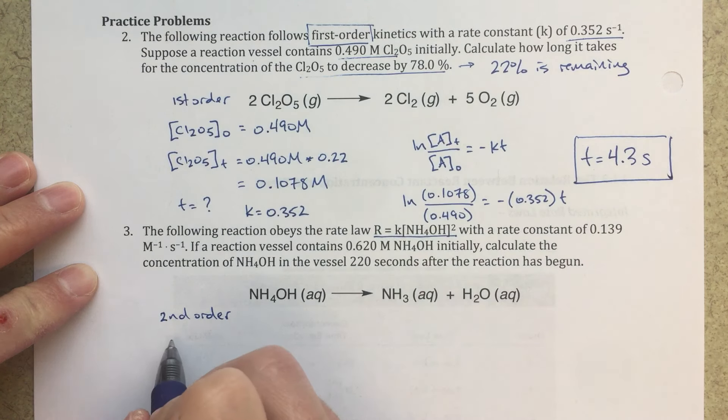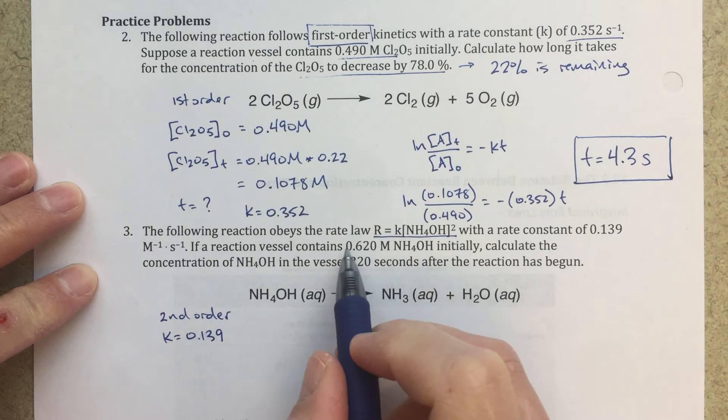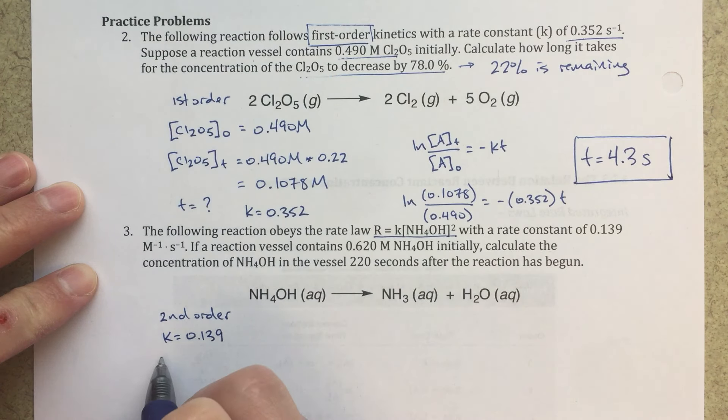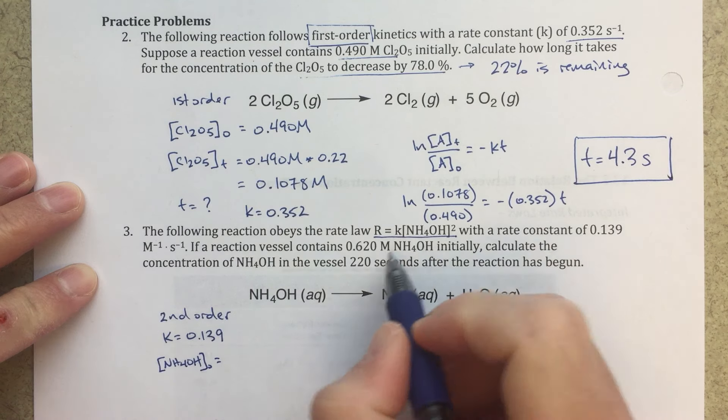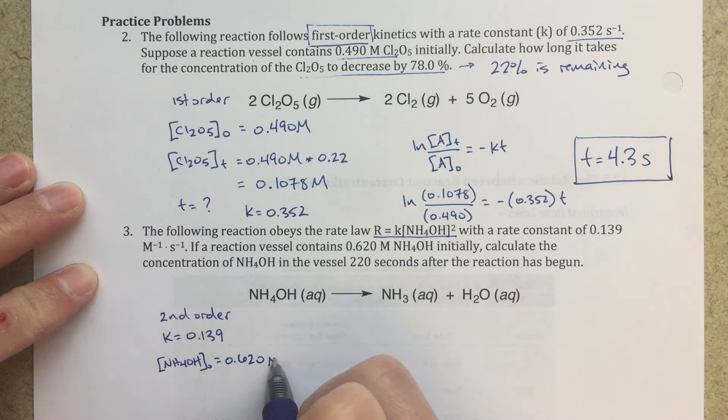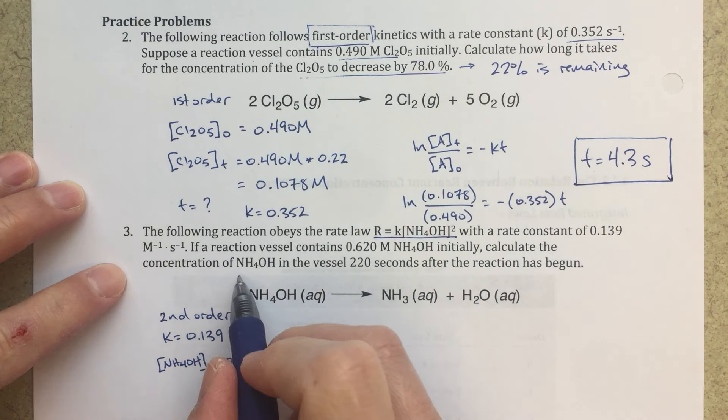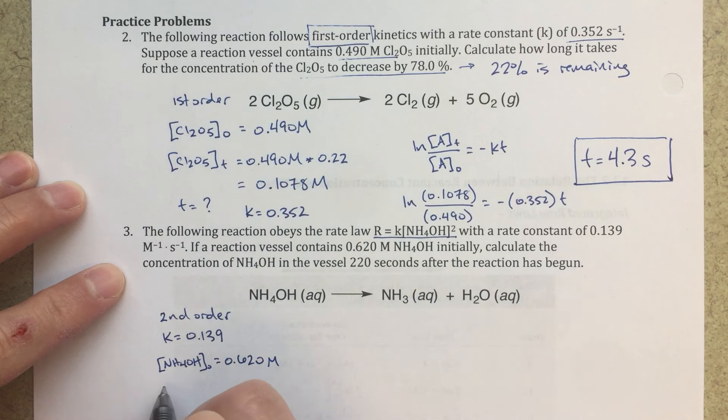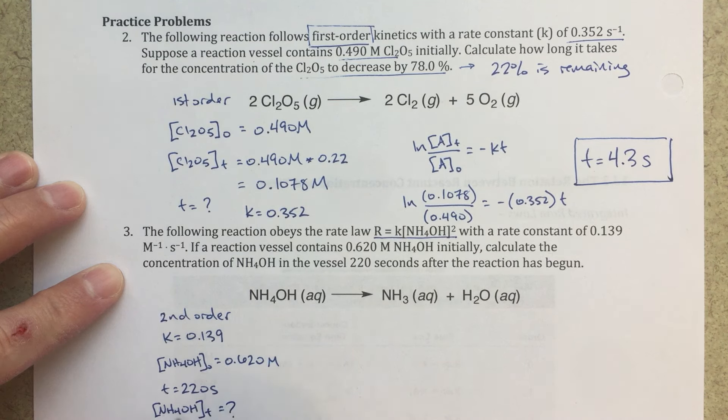With a rate constant, so we're given a K value, equals 0.139. I've got an initial concentration. So my concentration of NH4OH initially equals 0.620 molar. Calculate the concentration after this amount of time. So T equals 220 seconds. And then we are asked to find the NH4OH concentration after that amount of time. That's what we're looking for.